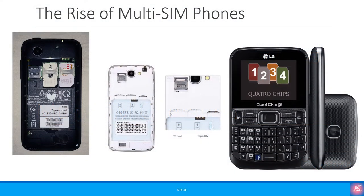Phones with multiple SIM cards are quite popular. Once upon a time we only had phones with up to two SIM cards — they were called dual SIM phones. Since then we've had the tri-SIM or triple SIM cards and now four SIM card phones called quad-SIM mobiles.